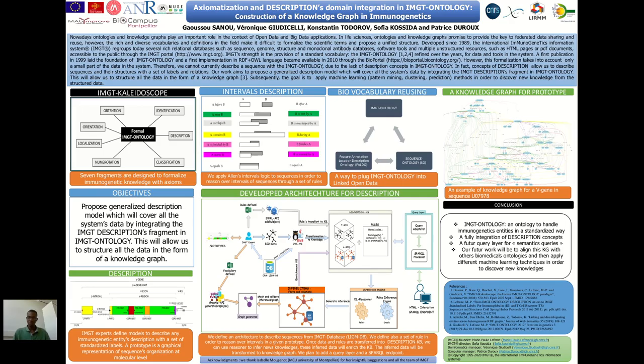The red color is for the relation of instantiation. In conclusion, IMGT ontology is an ontology to represent immunogenetics entities in a standardized way. A fully integrated description concept makes it easy to describe any immunogenetics entity. We plan to add a feature query layer for semantic queries. Our future work will be to align this knowledge graph with other biomedical science ontologies, and then apply different techniques of machine learning in order to discover new knowledge.